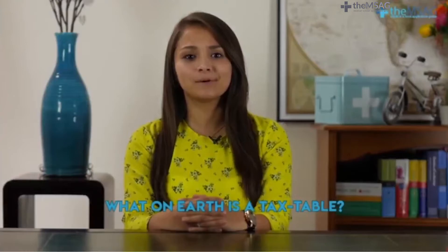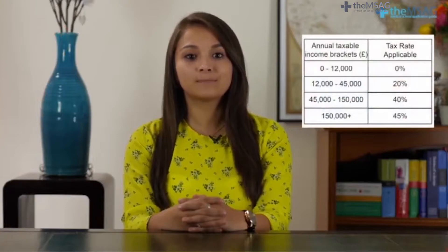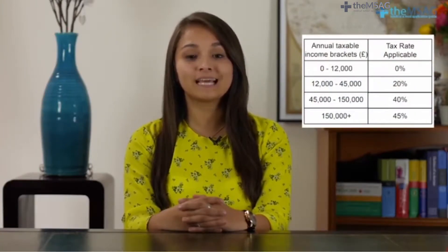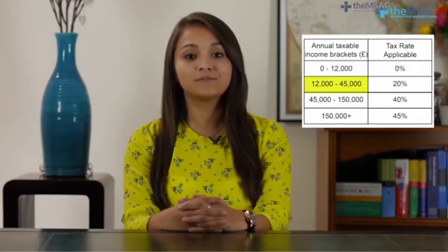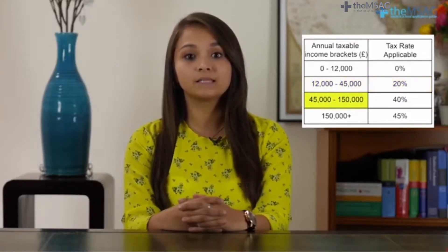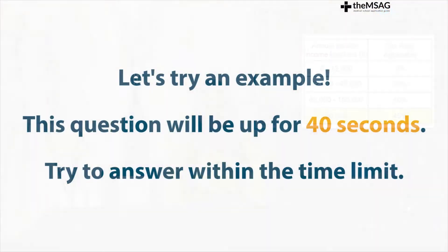What on earth is the tax table? It looks something like this. The two columns represent the income earned and the tax rate that can be applied to that income. If you earn between 0 and £12,000 you are not eligible to be taxed. If you earn between £12,000 and £45,000 your tax rate will be 20%. Between £45,000 and £150,000 your tax rate will be 40%. And those who earn above £150,000 will pay a tax rate of 45%. Let's get right into it by trying a straightforward tax table question you can expect in every UCAT exam.